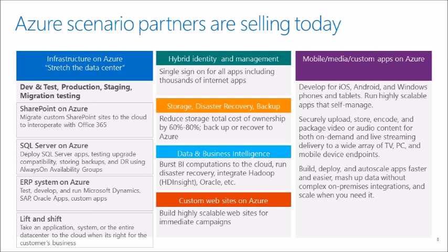ERP: we talked about ERP systems on Azure. Many ERP and CRM customers see the value of a SaaS offering and the value of the cloud. Lift and shift looks at Tier 2 and Tier 3 applications — do an assessment and help customers test and move those into Azure where they can retire that hardware.